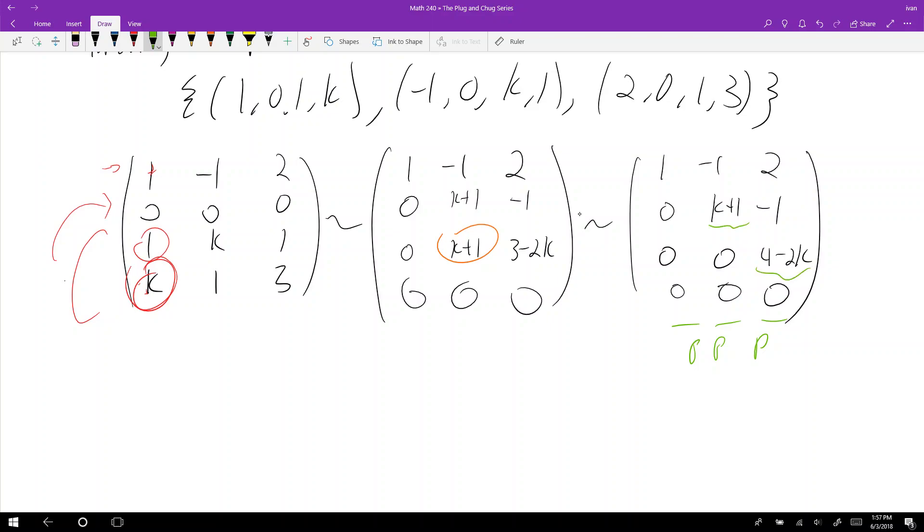All right, and what are those? Then if K equals negative one, then I have two pivots, i.e., the rank is two. And if K equals two, then the same thing applies, right? Then this last entry in the last row is zero, and then I only have two pivots, which means my rank is two. So you need to have the same number of pivots, or the rank of your matrix has to equal the number of columns.